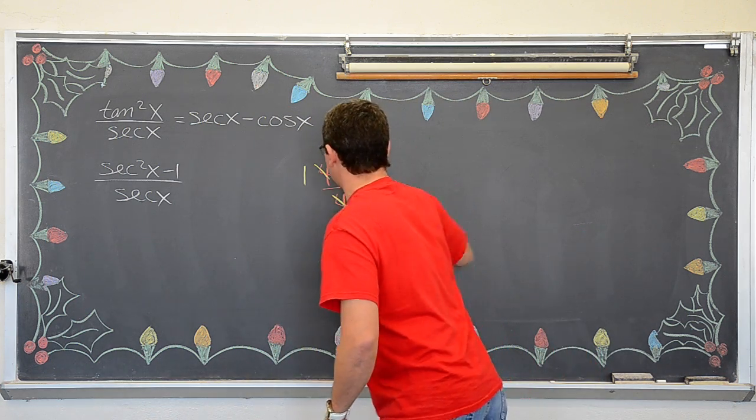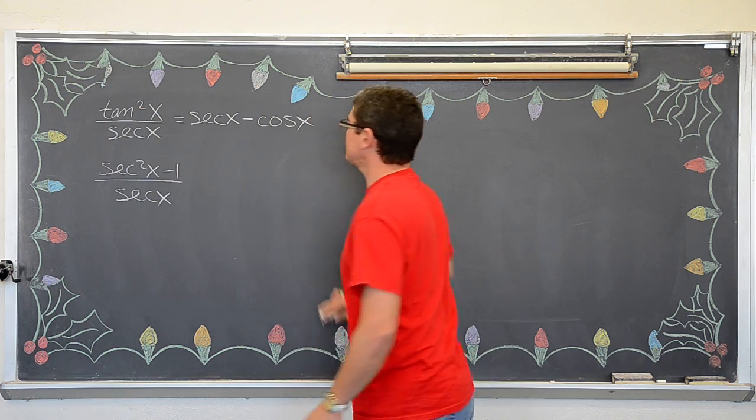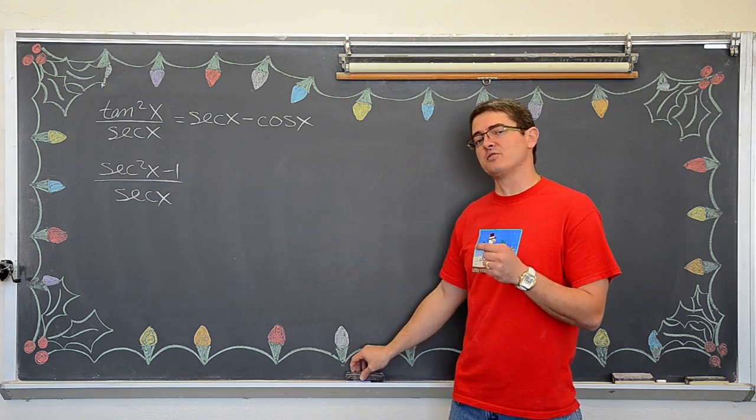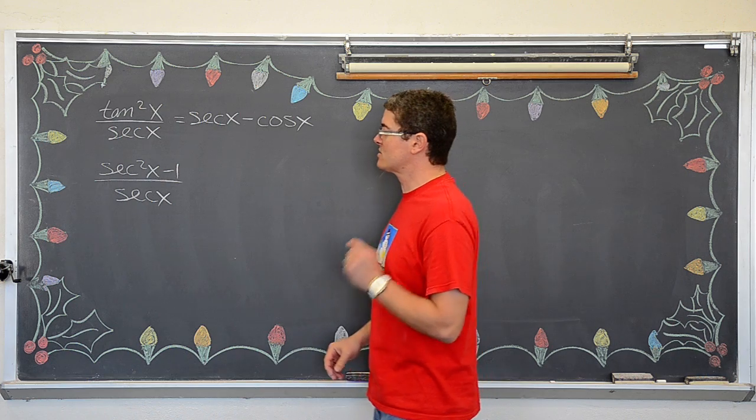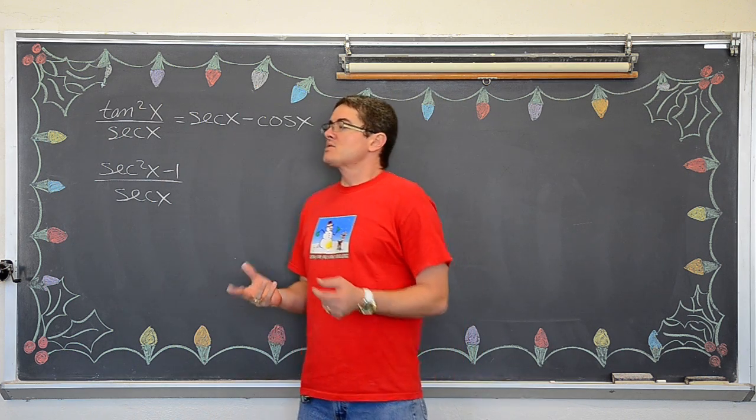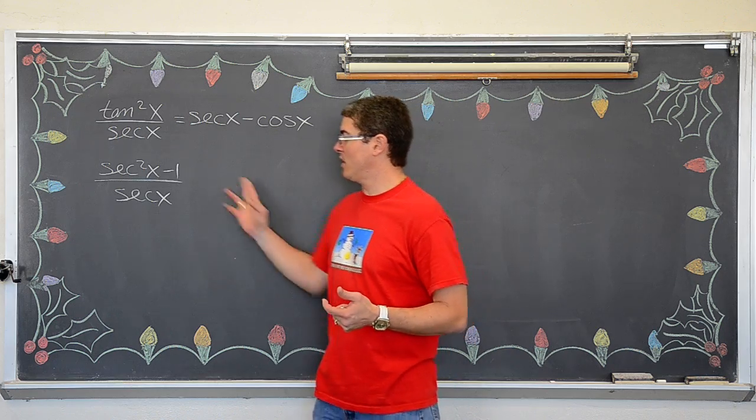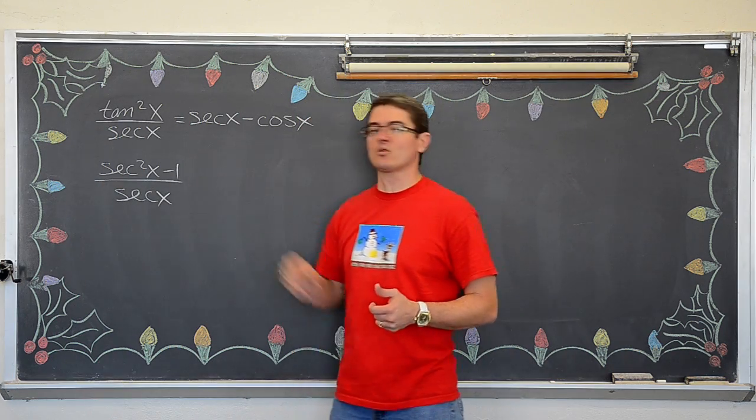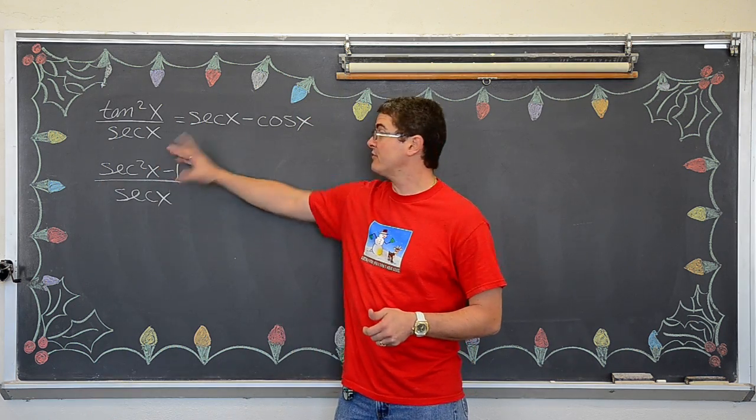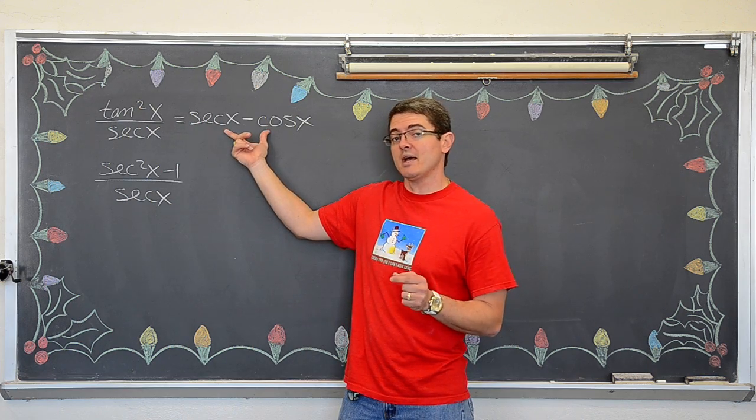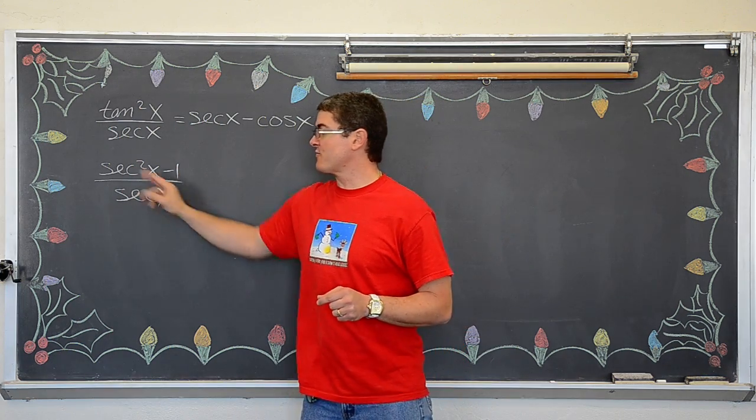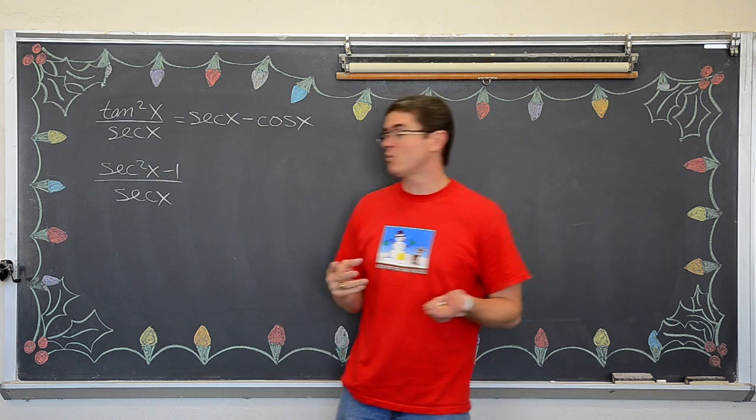Now, if it were multiplication, you could cancel out. You can cancel factors, but you cannot cancel terms. So, well, that is not going to cancel away. So, what else is going on? Well, this is one term. A fraction bar is a grouping symbol. So, we have one term on the left and two terms on the right. How can we take this fraction and break it up into two parts?